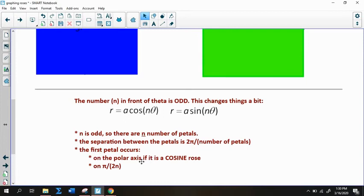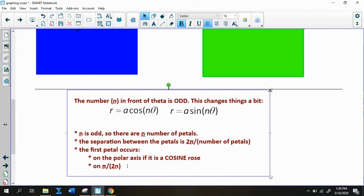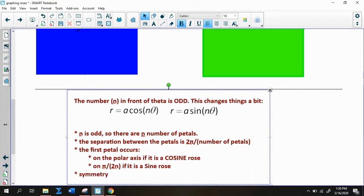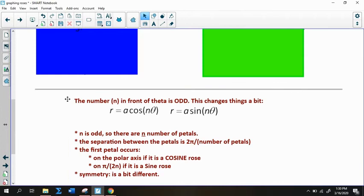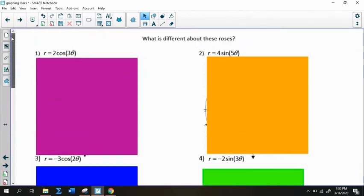The first petal will occur on the polar axis if it's cosine and again on pi divided by 2n if it's sine. The main thing that's different is the symmetry. I want to show you the graph and be able to see what's going on with the symmetry.